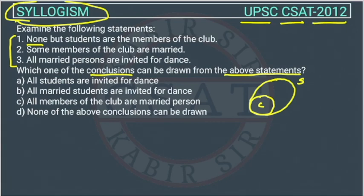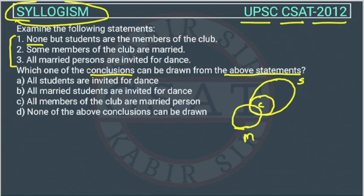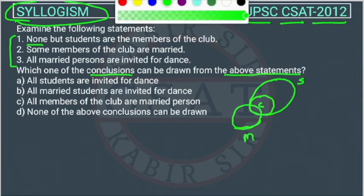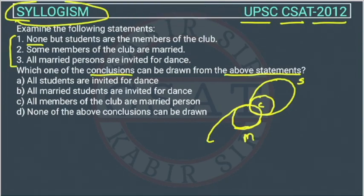Now the second statement: some members of the club are married. So some members of the club are married — these are the married ones. The third statement: all married persons are invited for dance. So all these married persons are invited for dance.